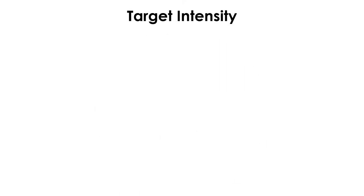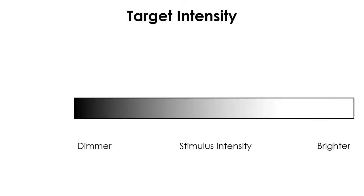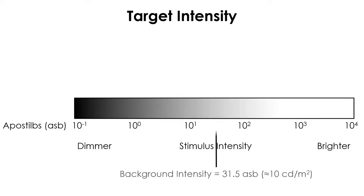Next, the luminance unit for the background and stimulus in visual field testing is called the Apostil, or ASB for short. This is a type of luminance measurement reflected from a surface and has been used in quantitative manual perimetry. The background luminance of the testing bowl is set at 31.5 ASB, which is bright enough to saturate rod photoreceptors, so visual field testing is carried out in the photopic range within which Weber's law holds.